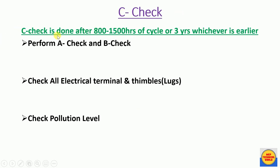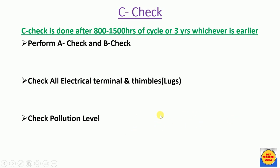C check is done after 600 to 800 running hours or three years, whichever is earlier. In C check, repeat A check and B check. Additionally, check all electrical terminals of the alternator, cable connections, and lugs. Also check the pollution level of the DG exhaust system, as it contains hazardous gases including nitrogen oxides and carbon dioxide — emissions must be within limits set by the pollution control board.